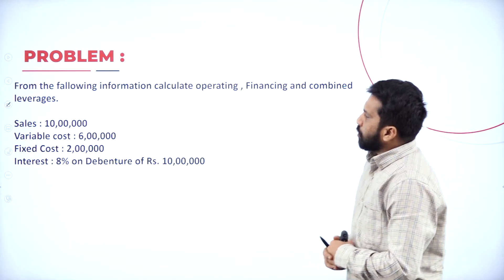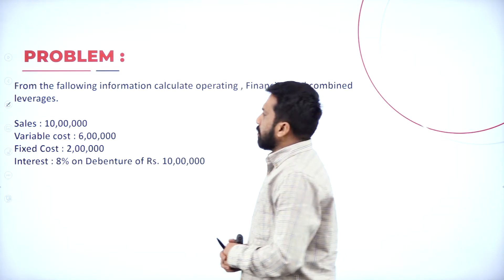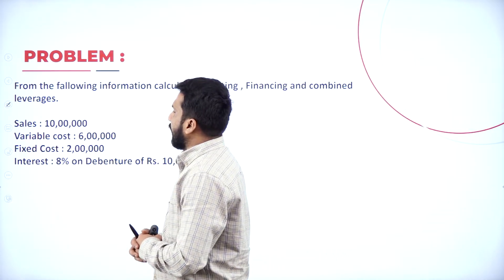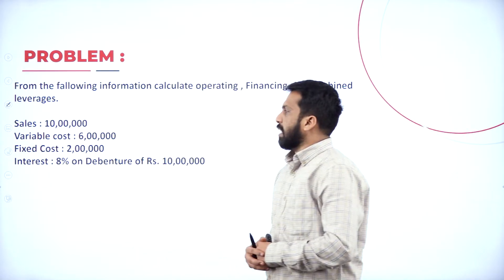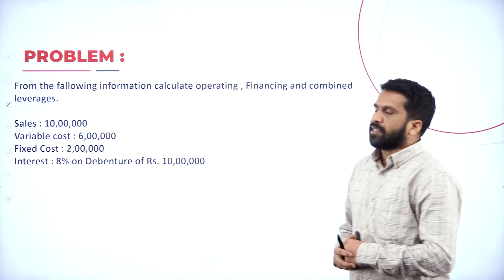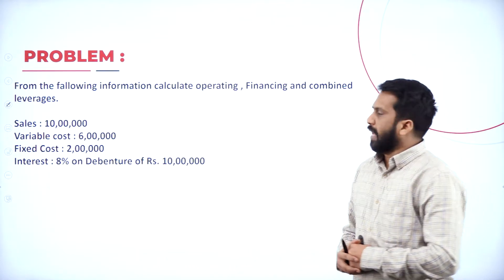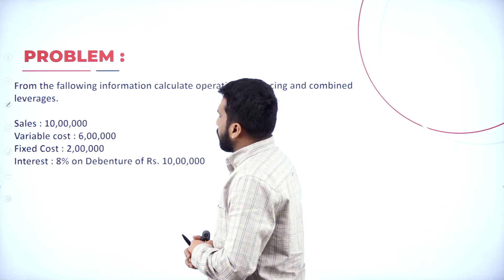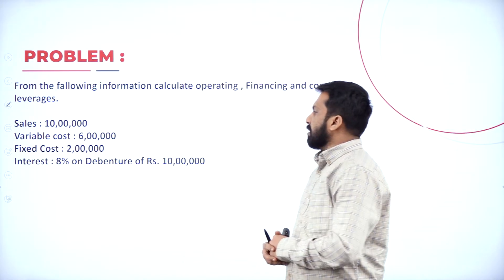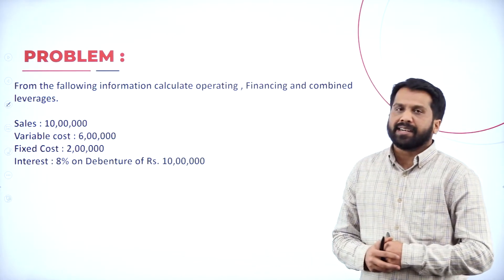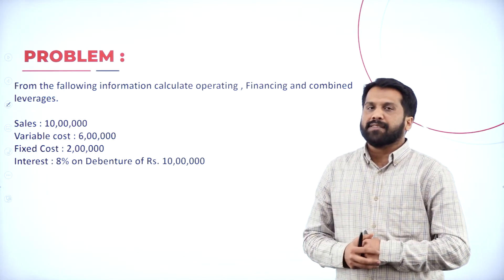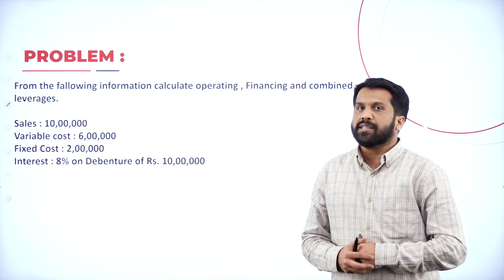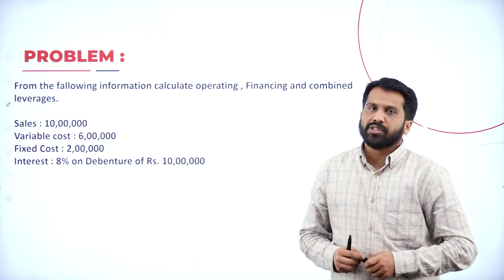For the first problem, you have sales of rupees 10 lakh, variable cost 6 lakh, fixed cost 2 lakh, and interest at 8% on debentures of rupees 10 lakh. All this information is given. I'll show you how to do this.